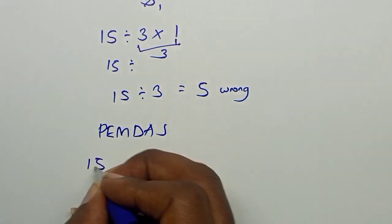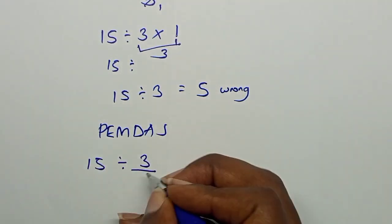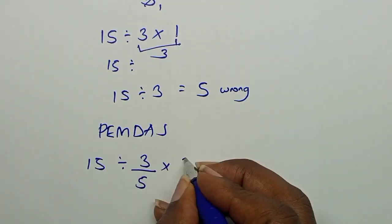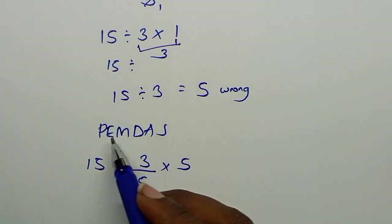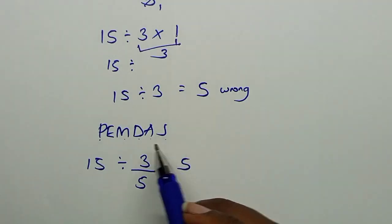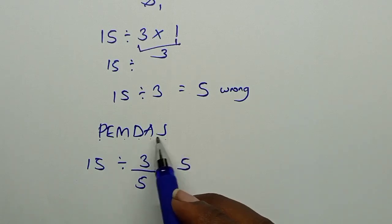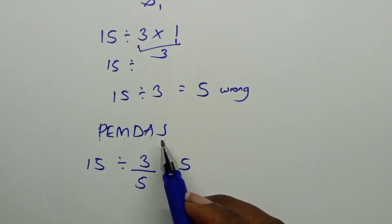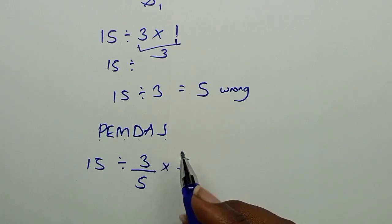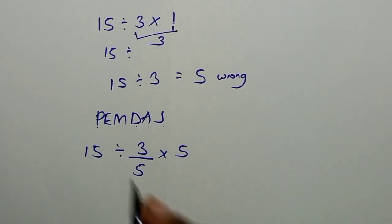So we have 15 divided by 3 over 5 times 5. PEMDAS: this is Parenthesis, Exponents, Multiplication and Division, Addition and Subtraction. Multiplication and division carry the same weight. You have to consider whichever comes first from left to right. It's always better you work from left to right so that you're always consistent and it sticks in your brain.